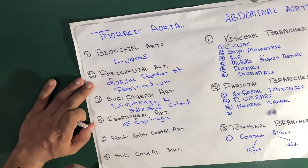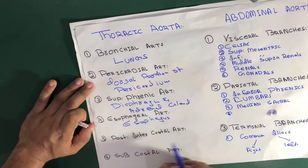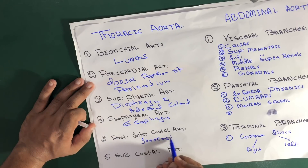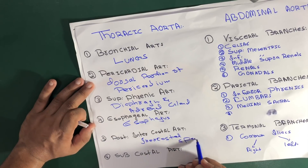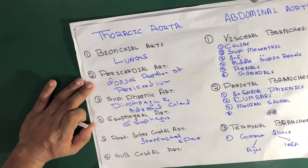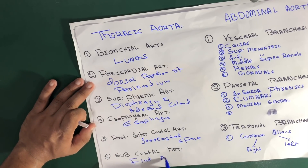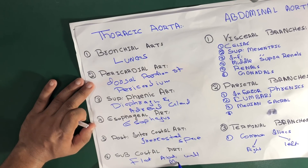The posterior intercostal artery supplies the intercostal space. The subcostal artery supplies the flat abdominal wall muscles.